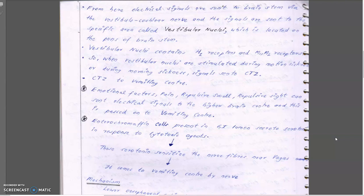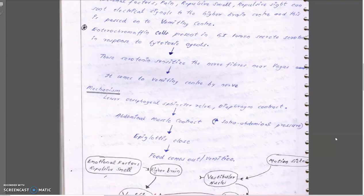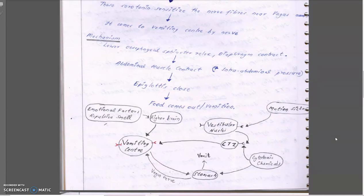Enterochromaffin cells present in the gastrointestinal lumen secrete serotonin. This serotonin is sensed by the vagus nerve, and via the vagus nerve the information comes to the vomiting center through the nervous system. The lower esophageal sphincter relaxes — the message for that comes from the serotonin produced in the GI tract by the enterochromaffin cells.